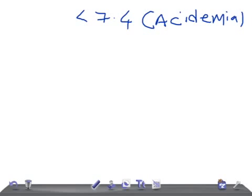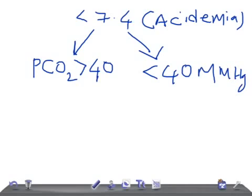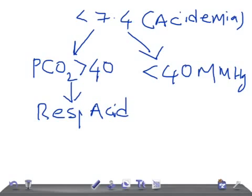Now you have to decide whether the acidosis is respiratory or metabolic. The next step is to look at the PCO2 — whether it is more than 40 mmHg or less than 40 mmHg. If the PCO2 is more than 40 mmHg, the patient has respiratory acidosis, because elevated PCO2 creates an acidic environment that lowers the pH.